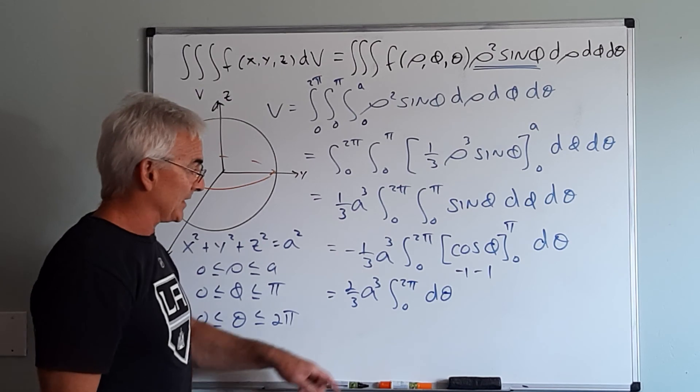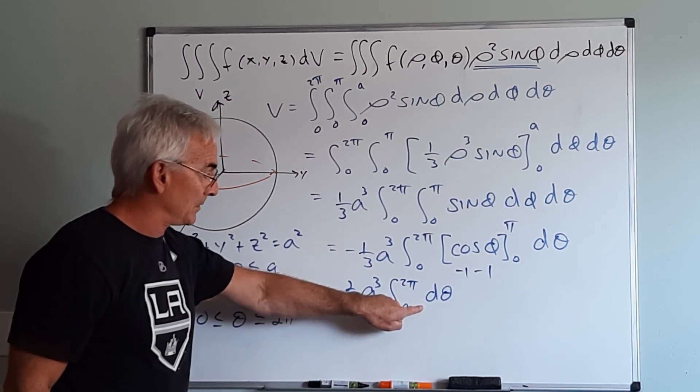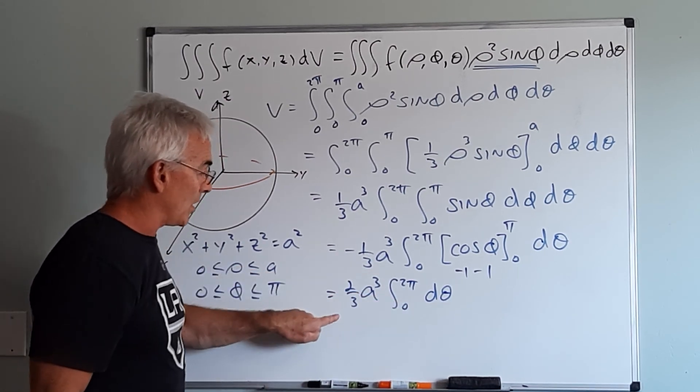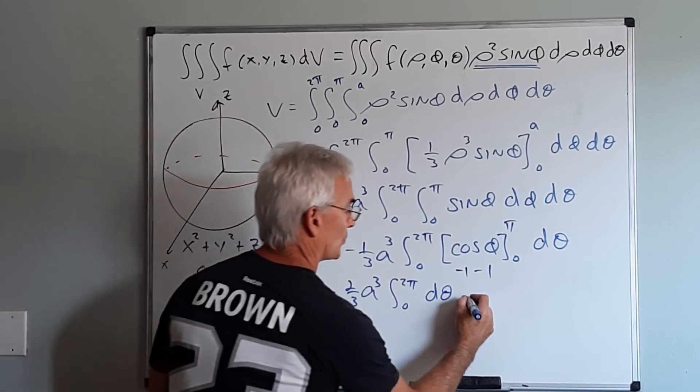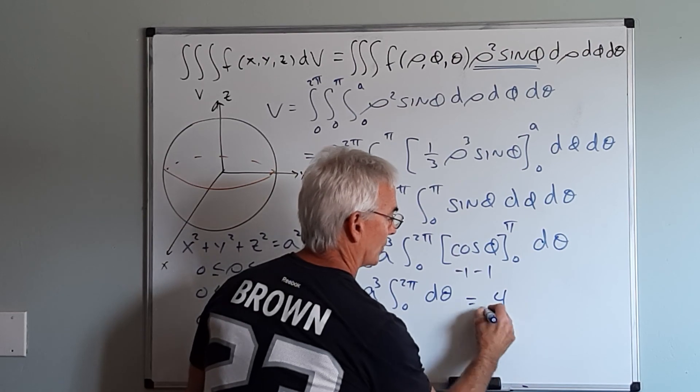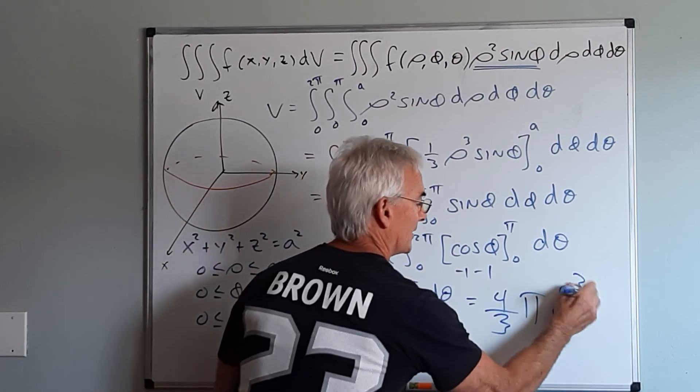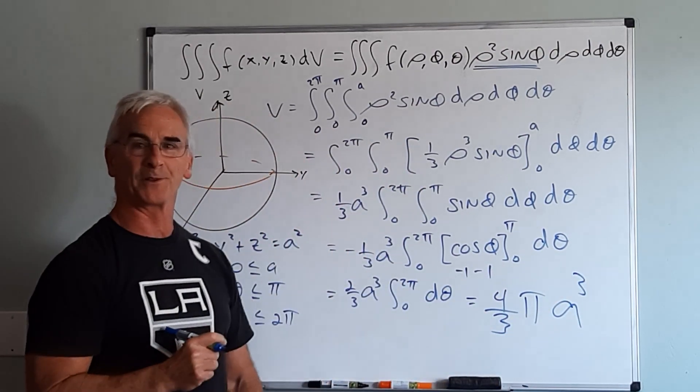So now I'm simply integrating a constant, 1 d theta, so I multiply this quantity by the length of the interval, so it would be 2 thirds times 2 pi, which would be 4 thirds pi A cubed, which is exactly the formula you were all expecting.